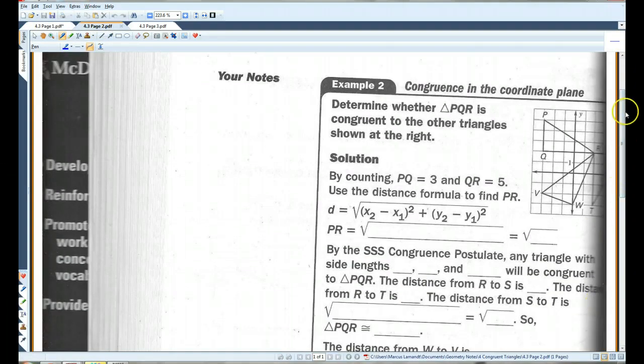Alright, I apologize this got really cut off here. But I'll try to draw in what's missing. This triangle. This is T. This is R. And let's see. I think this is an S over here. Alright. Determine whether triangle PQR is congruent to the other triangles.